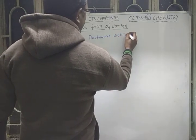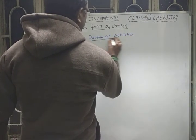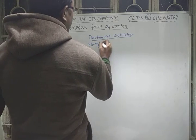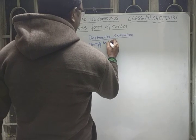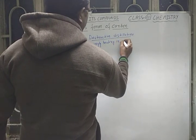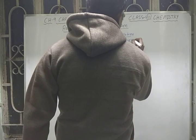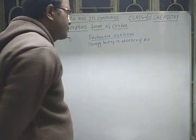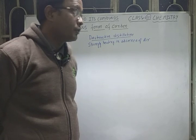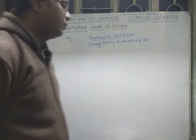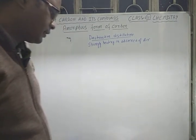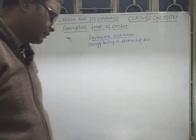Destructive distillation means strongly heating a substance in the absence of air. By the destructive distillation of coal or wood, you get charcoal. As a result of destructive distillation, the substance decomposes into its constituent substances.